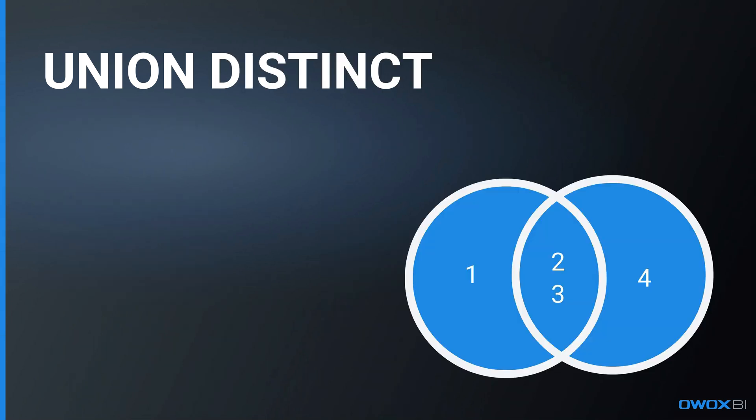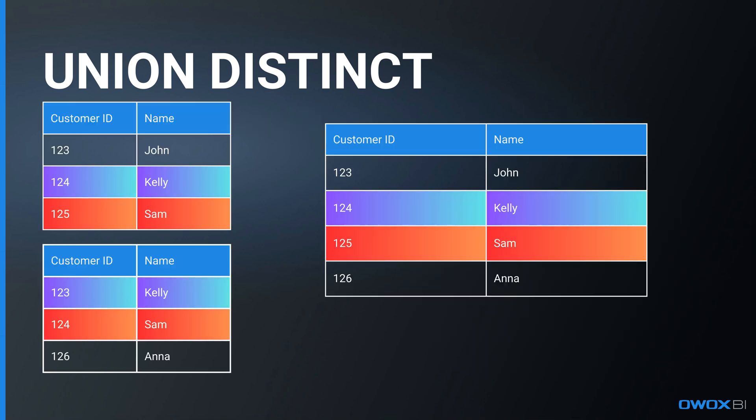In contrast, Union Distinct — which is sometimes called just Union — excludes duplicate rows, only showing unique results across all SELECT statements. Using Union Distinct on the same tables will result in showing just unique rows from both tables, so our Sam here is mentioned just once.